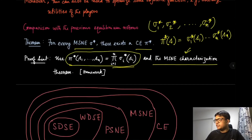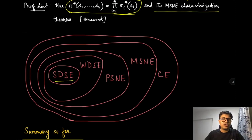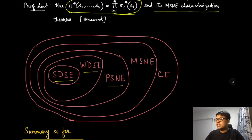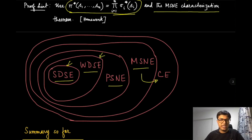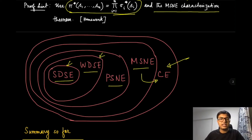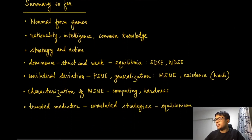This theorem gives us the bigger picture. We already saw that strongly dominant strategy equilibrium is a special case of weakly dominant strategy equilibrium, which is a special case of PSNE, which is a special case of MSNE. Now we have shown that for every game with an MSNE, we can always construct a correlated equilibrium. So the space of games admitting each concept is nested, with the correlated equilibrium being the most relaxed and largest set.